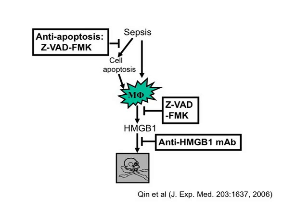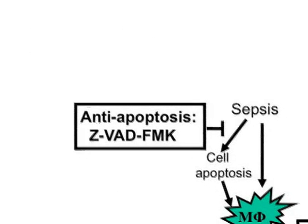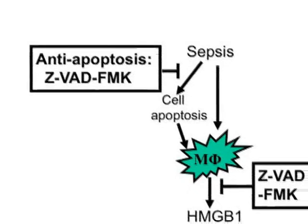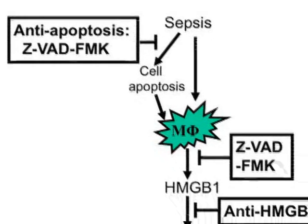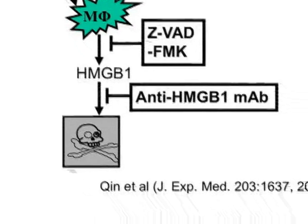We know that during sepsis, bacterial toxins can activate macrophages to release cytokines, including HMGb1. HMGb1 can cause tissue damage and death in sepsis. Sepsis also causes cell apoptosis. We found that apoptotic cells can also activate macrophages to release HMGb1, and thus cause tissue damage.